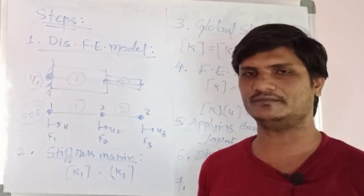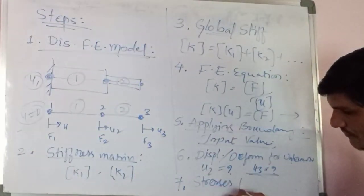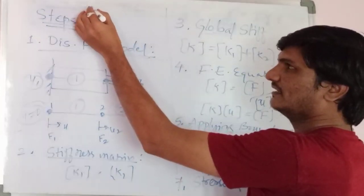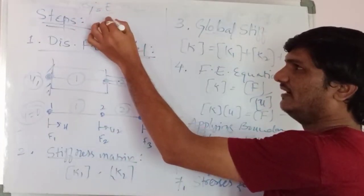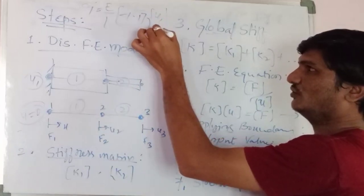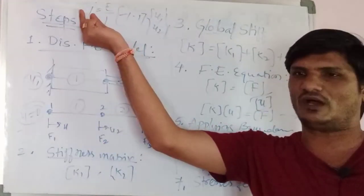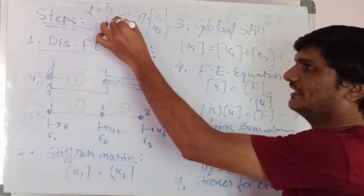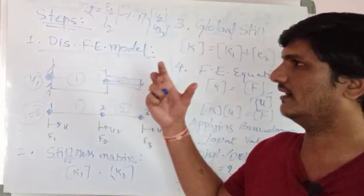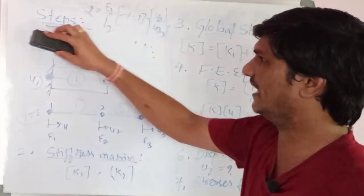After calculating the displacements, you need to calculate the stresses for each element. For a bar element, sigma = (E/L) × [-1, 1] × [U1, U2]. Using this equation, calculate stress sigma1 for element one, and sigma2 = (E2/L2) × [U2, U3] for element two. Calculate the stresses for each individual element.